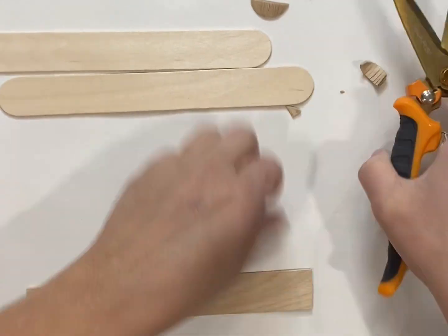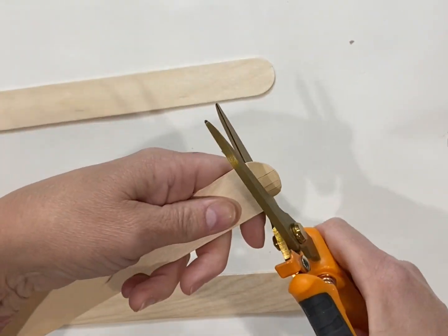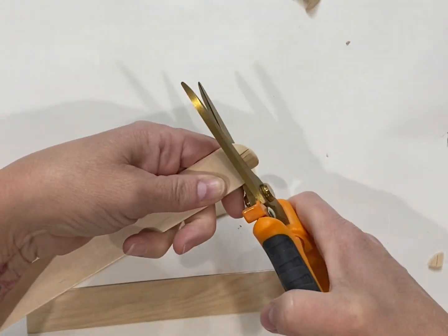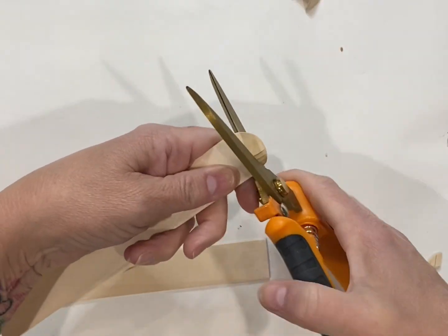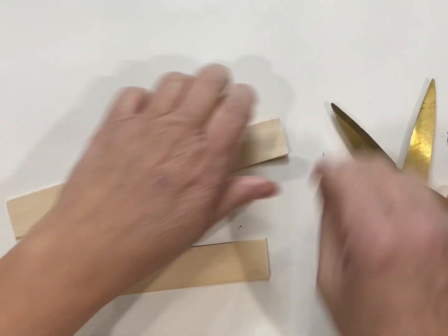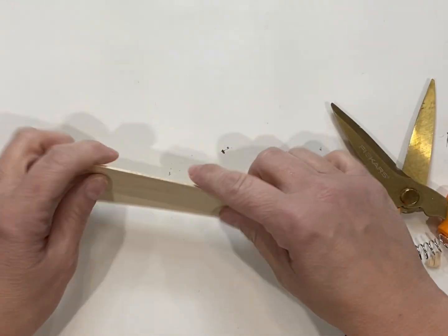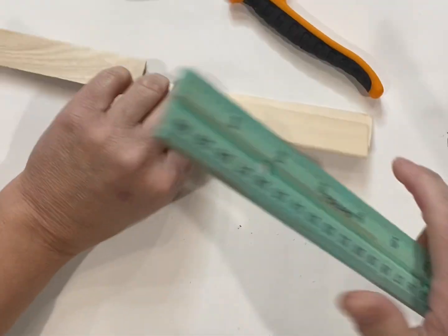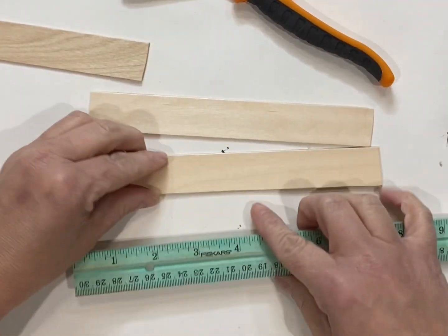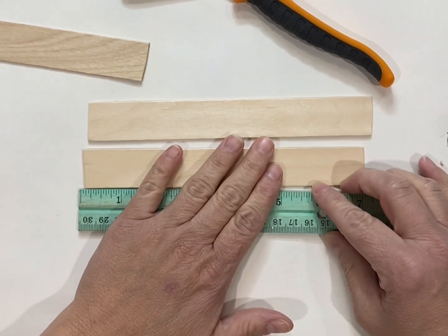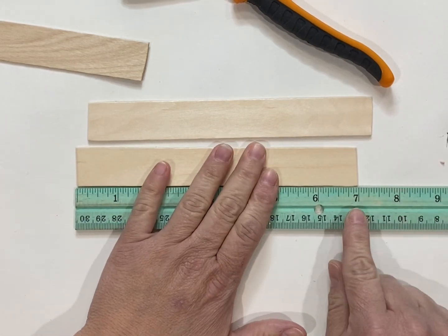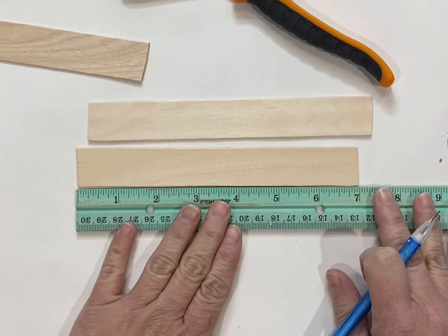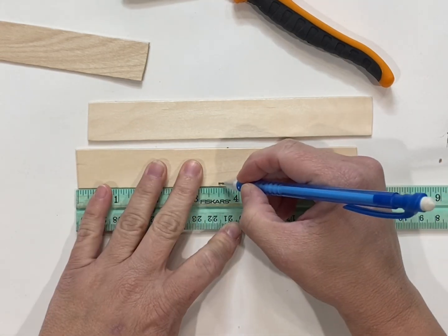I'm starting off by taking three jumbo craft sticks and I'm going to snip off the rounded ends so they're square and flat at the end. Do that on all three. Then I'm gonna lay them out and measure to find the center. These sticks are 7.87 inches long, and after I cut the ends off they're about seven inches.